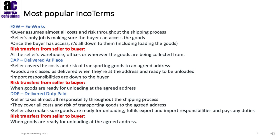The third one is Delivered Duty Paid. Here the seller takes almost all responsibility throughout the shipping process — it's kind of the opposite of Ex Works. The seller covers all costs and risk of transporting goods to the agreed address. This is usually where the seller has the buying power and the ability to understand all of the processes for export, but also import responsibilities within the country of delivery. Risk transfers from seller to buyer when the goods are ready for unloading at the agreed address.